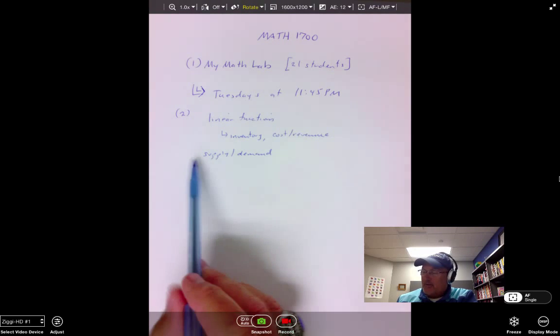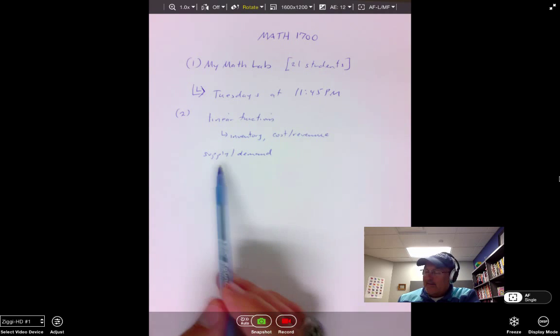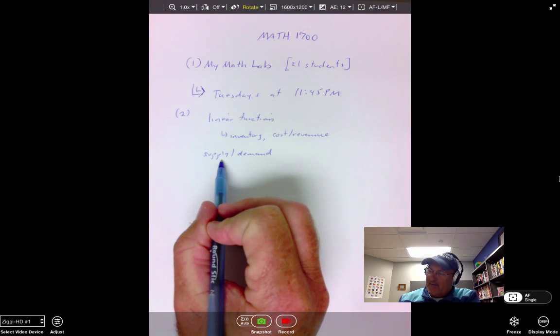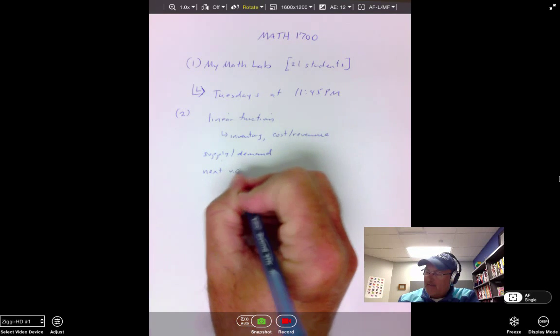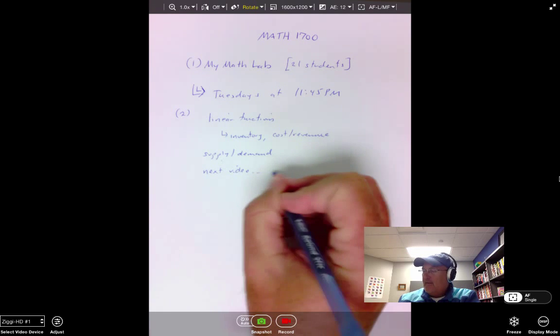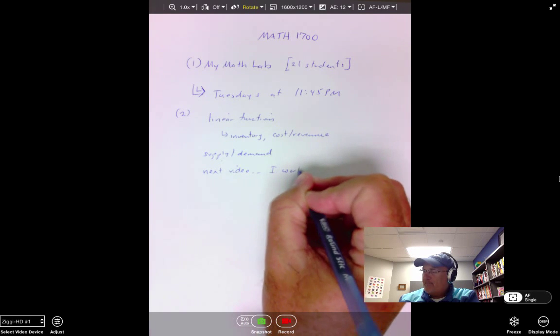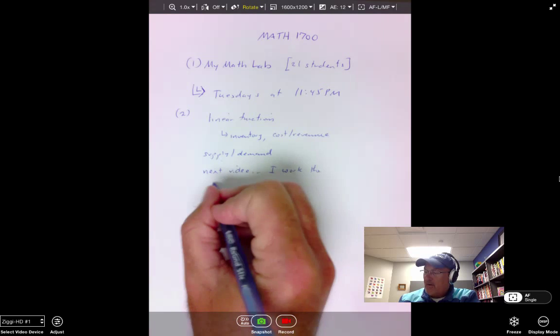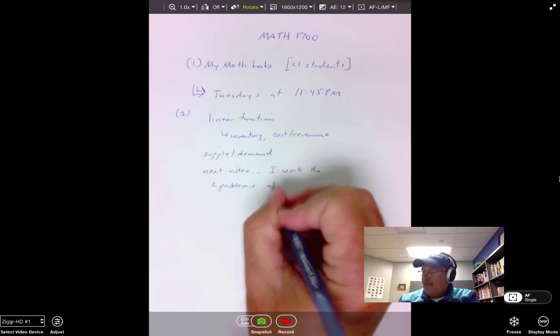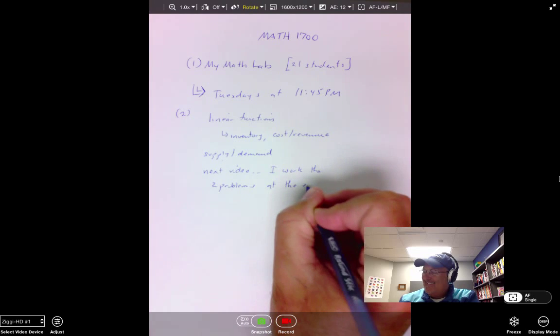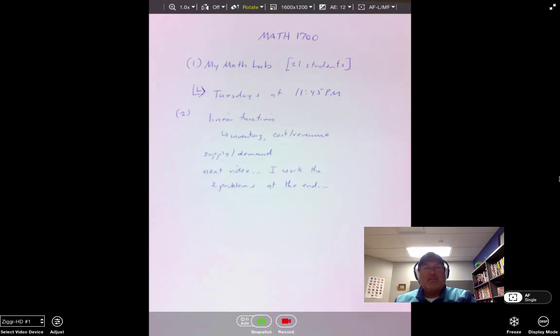Or I'm sorry, the equilibrium point, which consists of a quantity and a price. At the end of this video I give you two problems. And so in the next video, which is very short, I work the two problems at the end of the previous video.